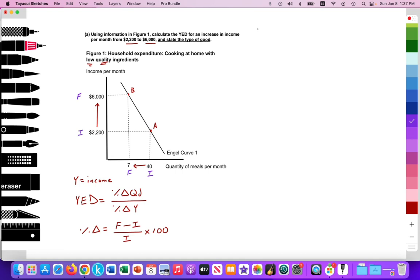So let's check your calculations. So again, YED equals the percent change in the quantity demanded divided by the percent change in income. Let's first tackle the change in quantity. So percent change in the quantity demanded is equal to the final value of 7 minus the initial value of 40 divided by 40 multiplied by 100.